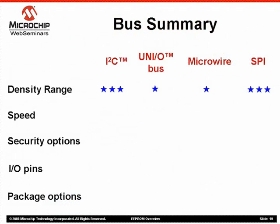Let's compare the four buses. Here's a chart showing key features of each protocol: density range, speed, security options, number of microcontroller IO pins required, and package options. Each feature is ranked with 1 to 3 stars, with 3 stars being the best. I2C and SPI have the widest choices in density, all the way up to 1 megabit, earning 3 stars. Microwire and UNEO buses have a comparatively limited density range of 1 through 16 kbits, so they only get 1 star.